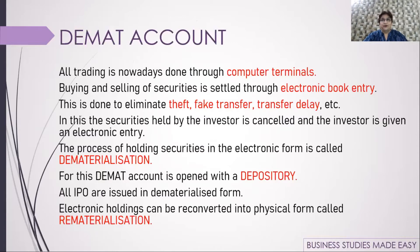All trading is now done through computers. Just as you book a movie ticket online and simply show your phone to enter, or show a digital boarding pass for airlines, all buying and selling of shares is done through computer terminals. In the DMAT account, securities are kept as electronic book entries. Earlier, securities were issued in physical paper form — sometimes lost in post, delayed, or faked — so electronic form was introduced to avoid all these problems.